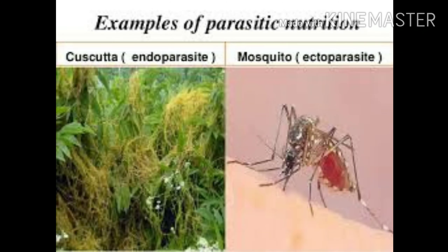What is an example of parasitic nutrition? The best example is the mosquito, which is all around us all the time.